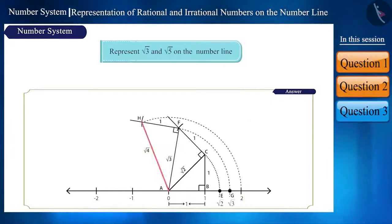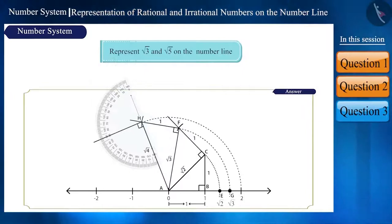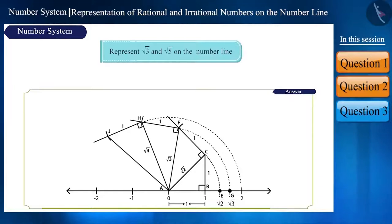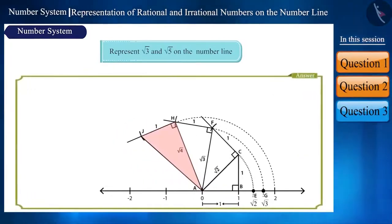Now to represent √5 on the number line, we will draw a perpendicular on the line AH and measure a distance of one unit using a compass and draw an arc on the perpendicular which cuts at point J. Now, draw a line joining point A and J. We get a right-angled triangle AHJ.